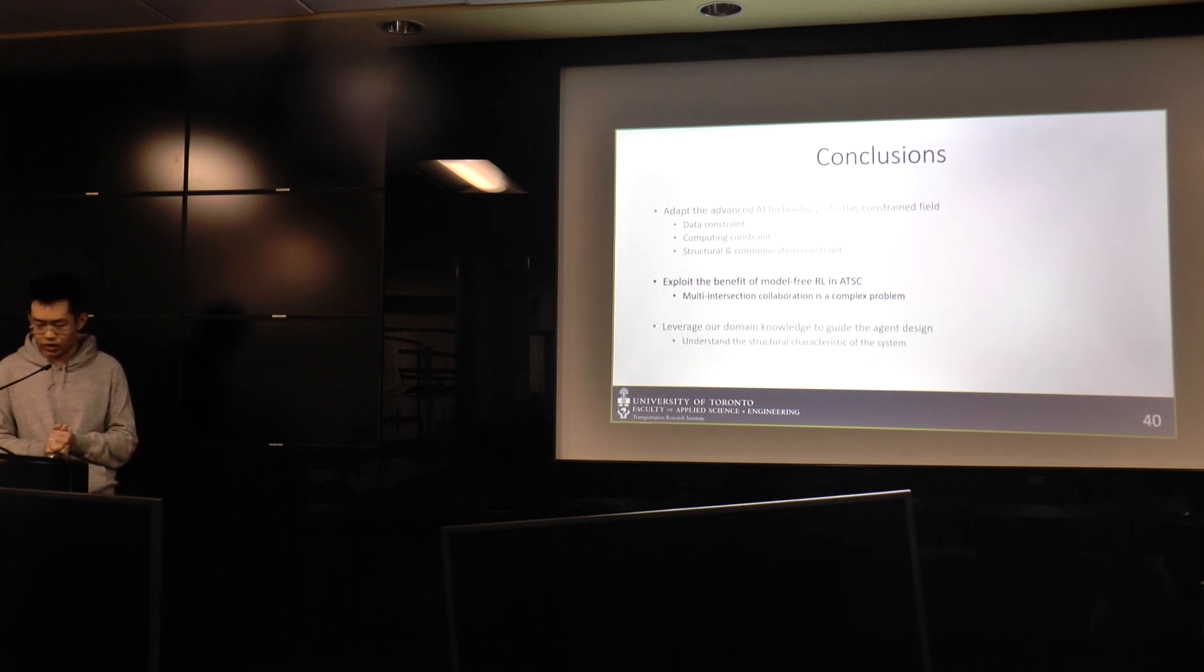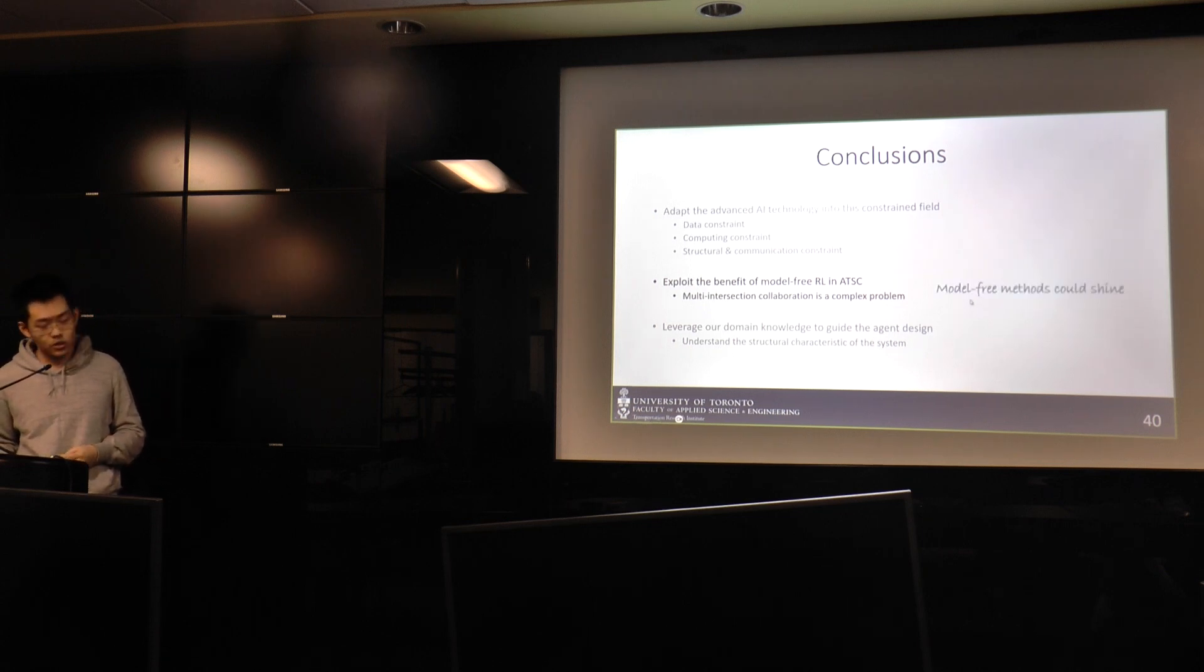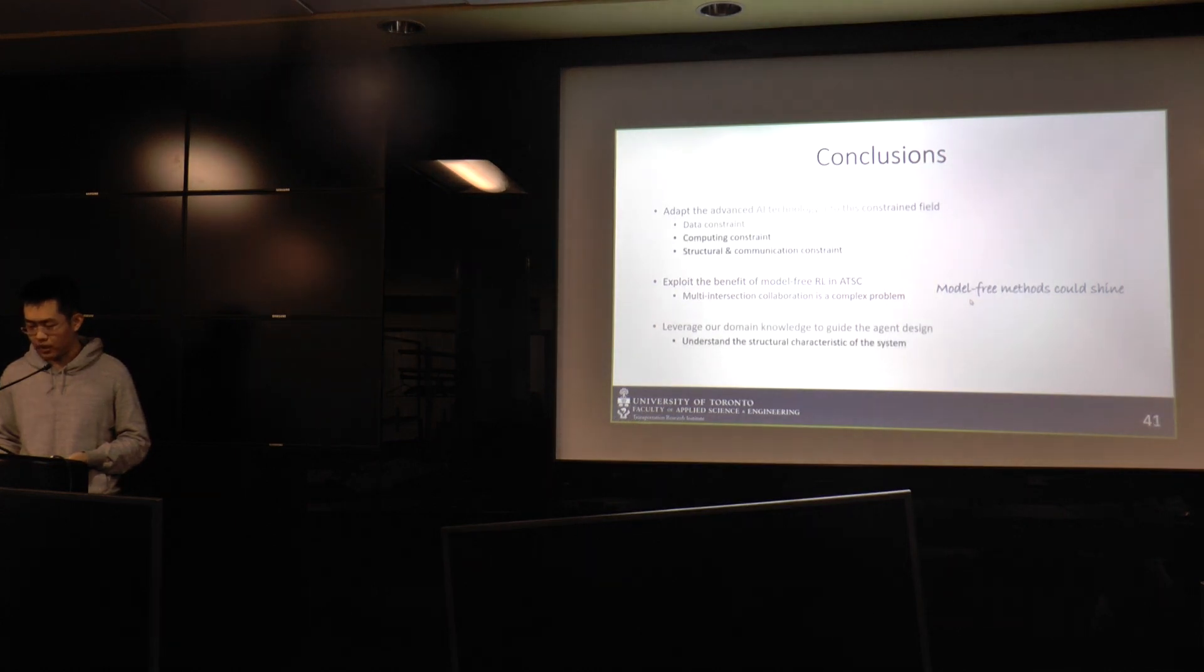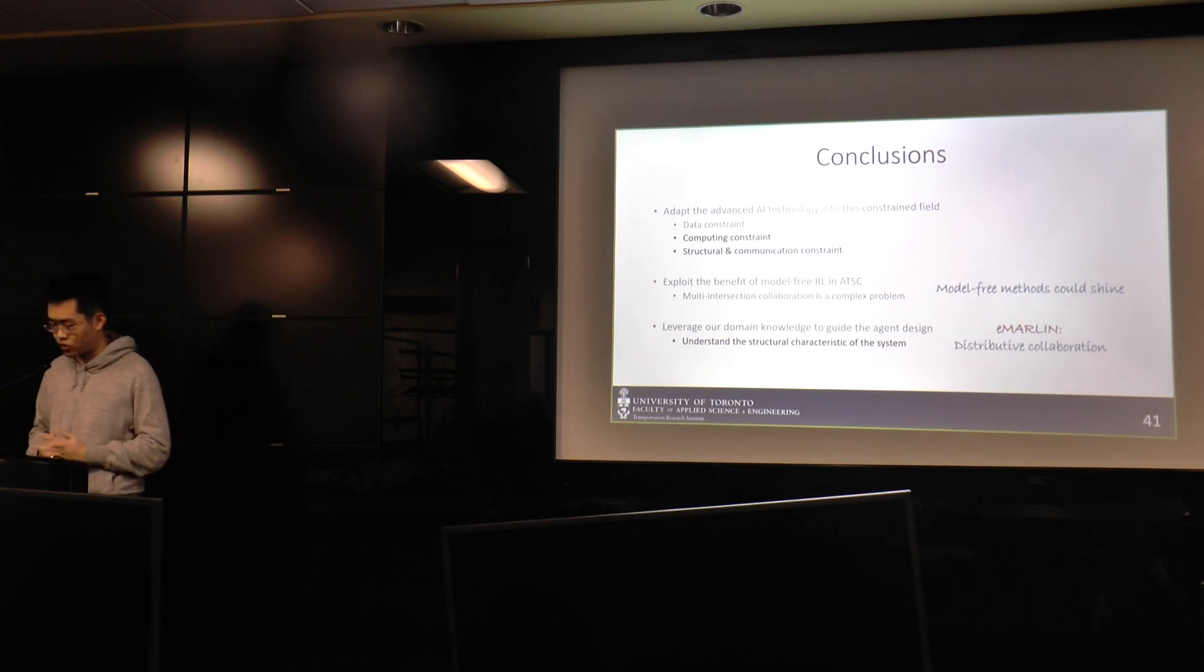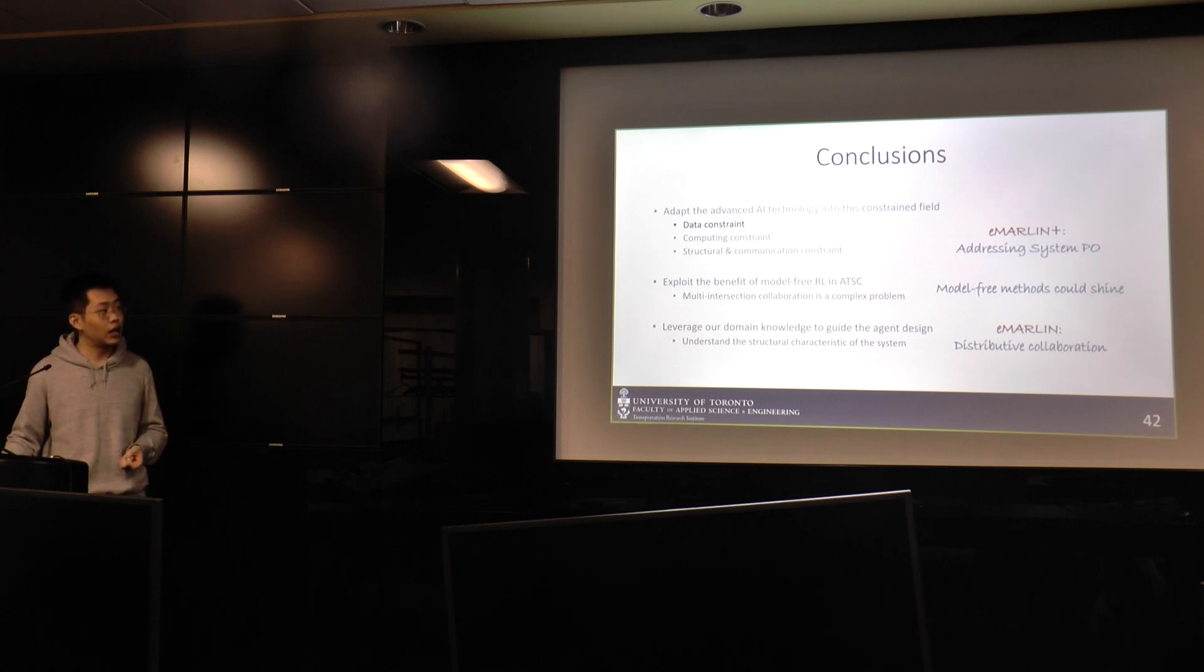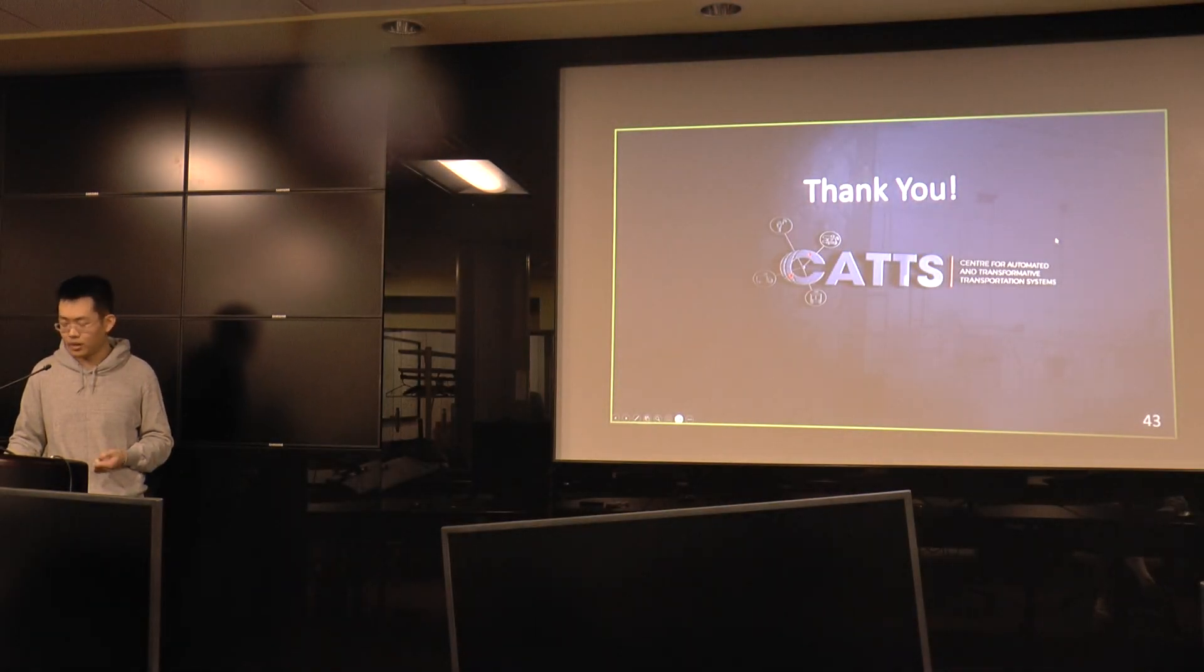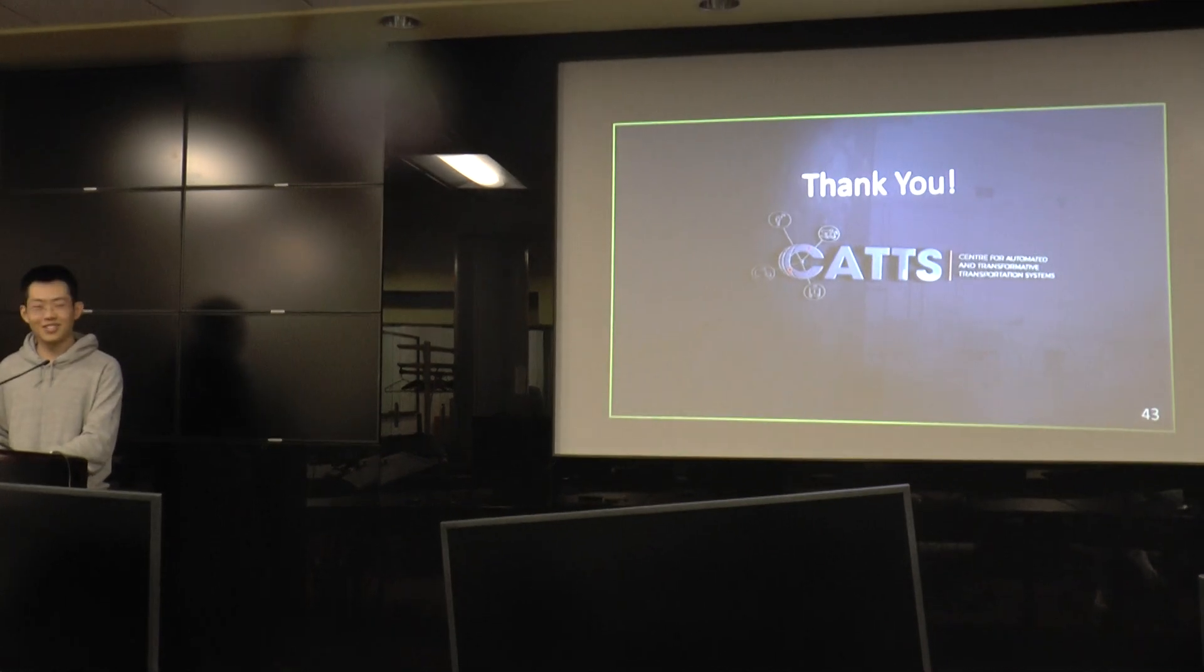To conclude today's talk, first, we oversee the potential benefits we can gain from model-free reinforcement learning when we have a complex model. This is where model-free methods could shine. Secondly, we want to leverage the domain knowledge to design our agents. This is how we conclude the eMARLIN, which is a distributive collaboration algorithm. And lastly, if we take the data constraint into consideration, we need to address the partial observability issue, and that's the insight we gain from the eMARLIN+. So it's pretty dense, but thank you for bearing with me. That's all for today. Any questions?